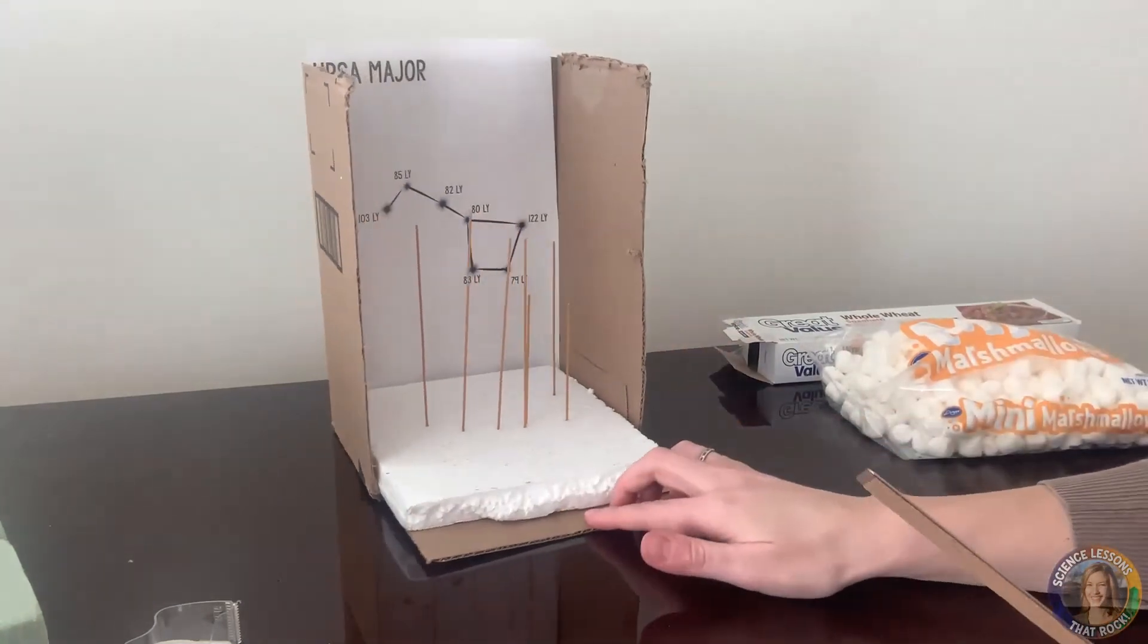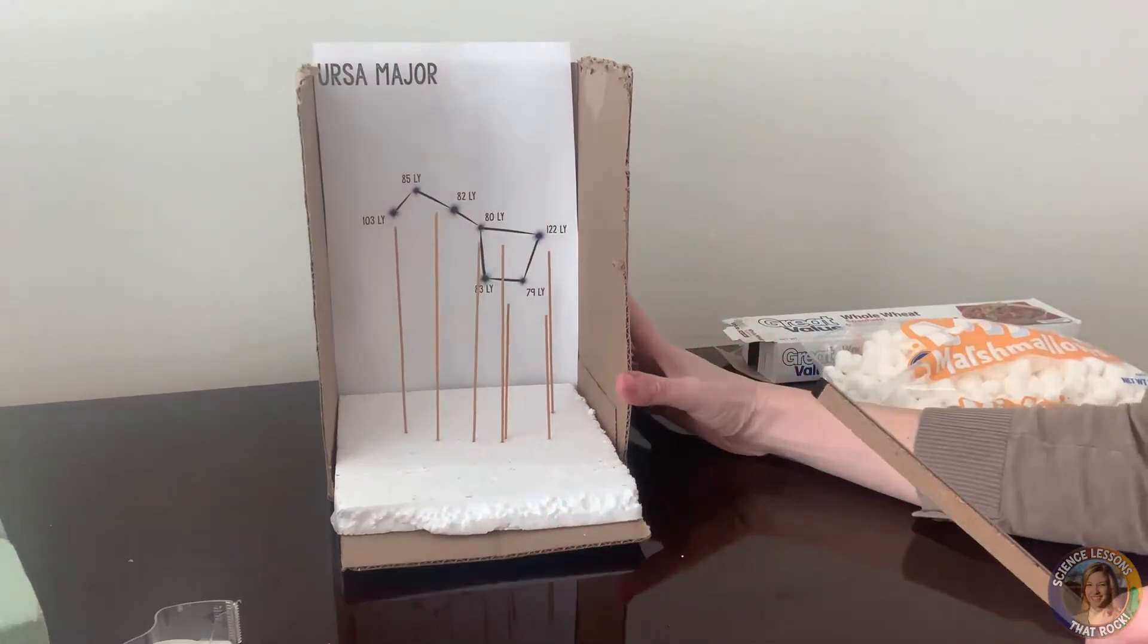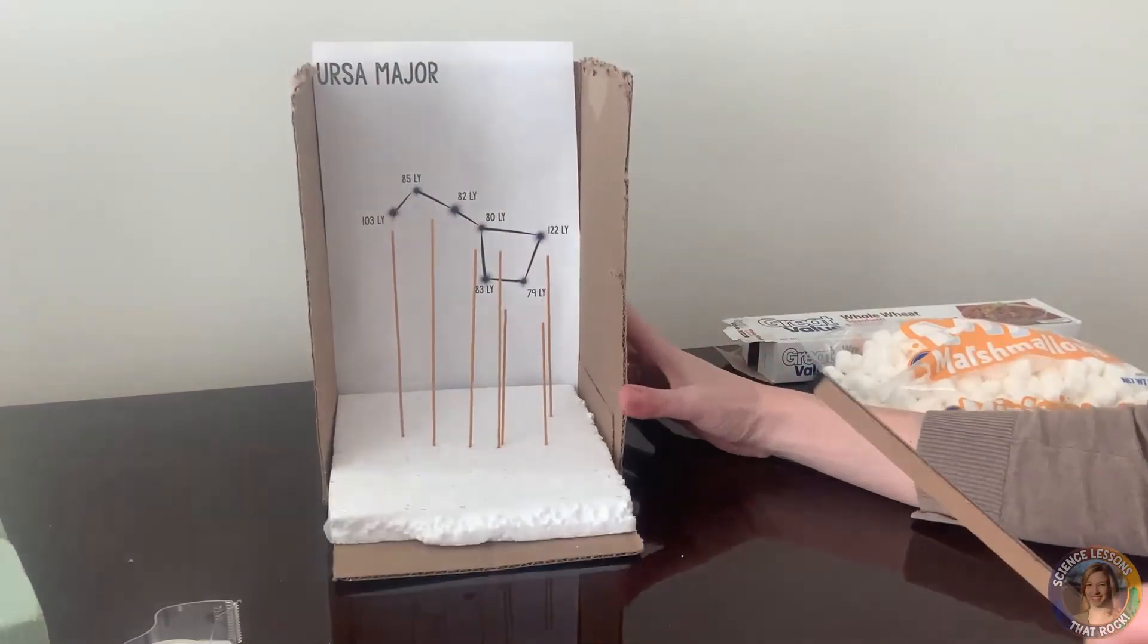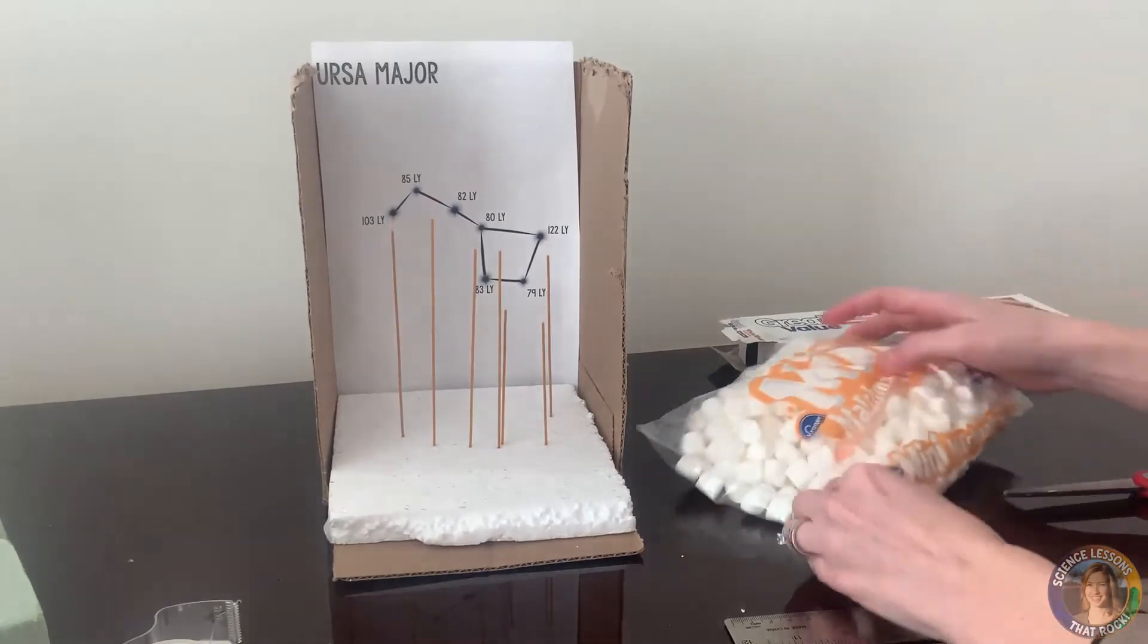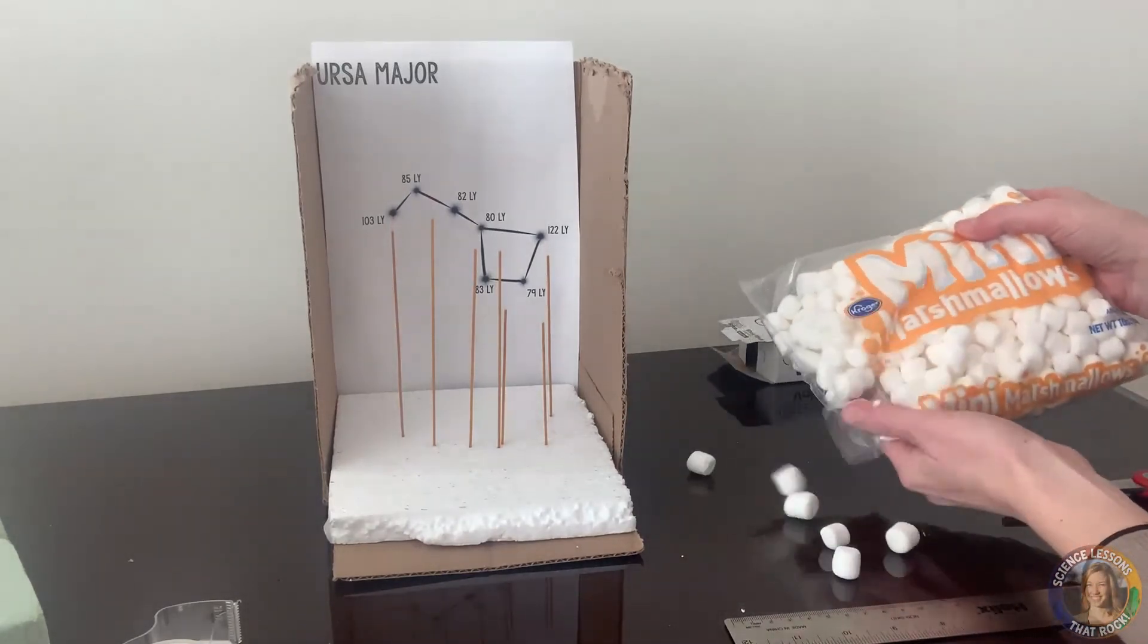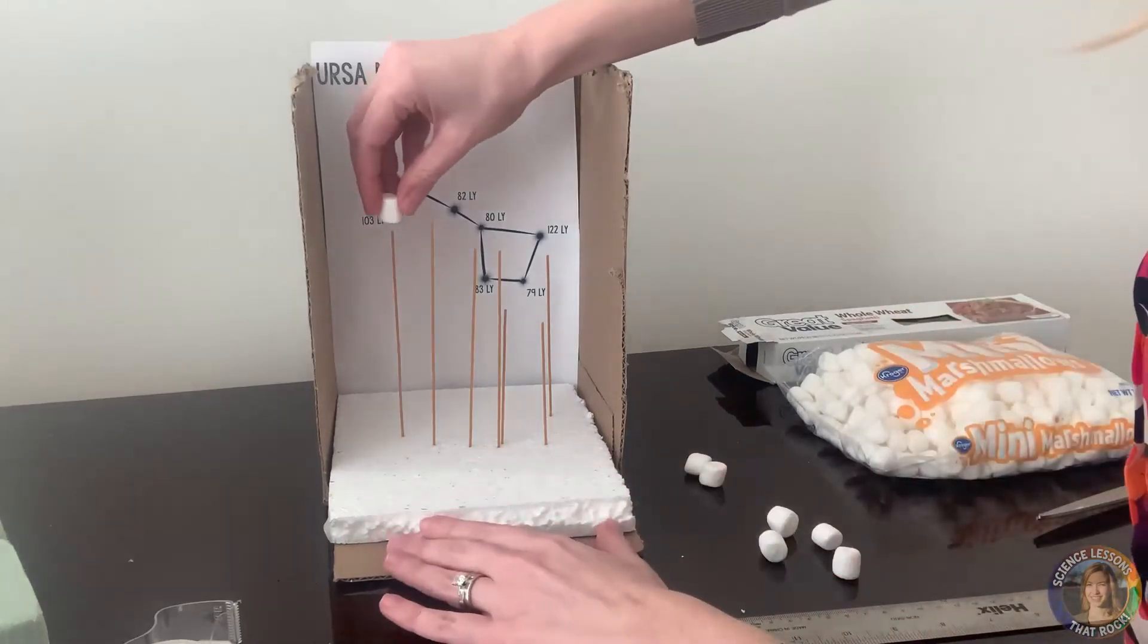Once you have all of your spaghetti there so it's lined up with the stars, then you can take your marshmallows and just stick them right on top.